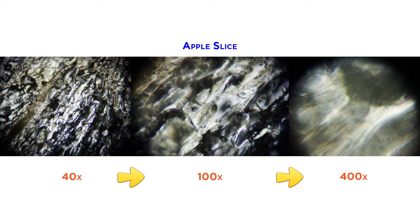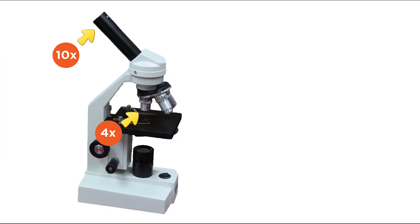To find out how much larger than life you are viewing the objects on a slide, a little simple math is required. Use the magnification of the ocular lens and the magnification of the objective lens you are using as factors in a multiplication problem. Multiply the power of the ocular lens times the power of the objective lens.